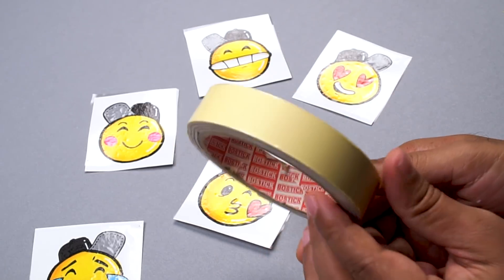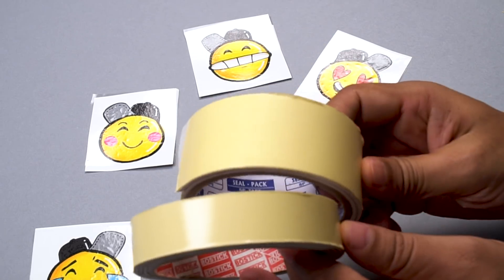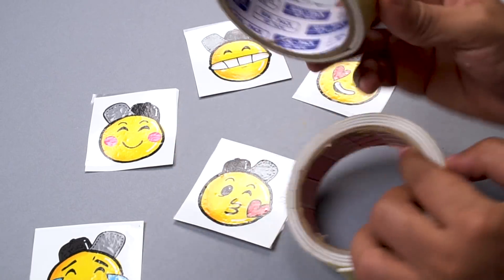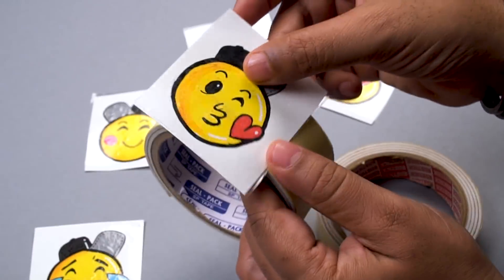Now I am going to use a foam tape which is this double sided tape. Again, you get them in different sizes. So I have a fatter one here. But as you can see, my emojis are actually bigger than this fat one too.